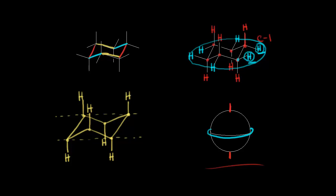Let's put in those equatorial hydrogens into our chair conformation. We start at carbon one and we start down — equatorial down. So we draw a line down here and put in our hydrogen. And then at carbon two it would be up, so we put that in. We alternate, so at carbon three it would be down. At carbon four it would be up. Carbon five would be down. And carbon six would be up.